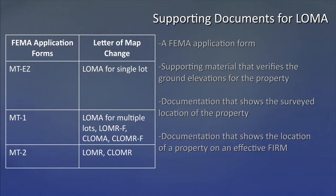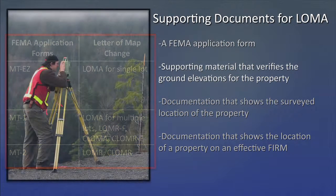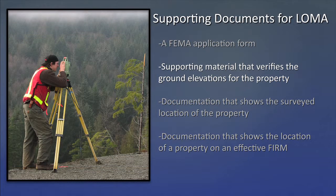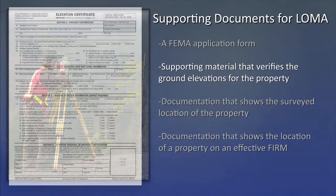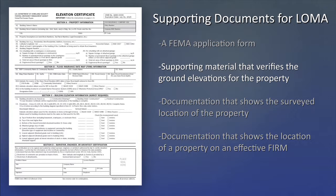The documentation needed to apply for letters of map change is similar for each type. For most letters of map change, a landowner will need a FEMA application form — there are three different application forms, all available on the FEMA website. The correct form for each letter of map change is shown on screen, along with supporting material that verifies the ground elevations for the property. This is usually obtained either from existing documents or by hiring a licensed land surveyor or registered professional engineer. If the letter of map change involves a building constructed after the community's FIRM date, an elevation certificate might be available through the local floodplain manager, previous seller or builder, or filed with the property deed.